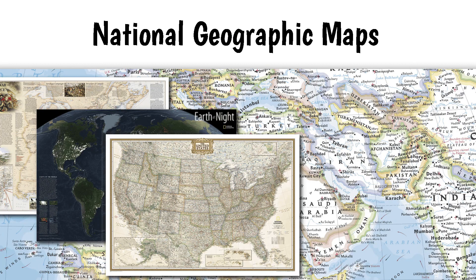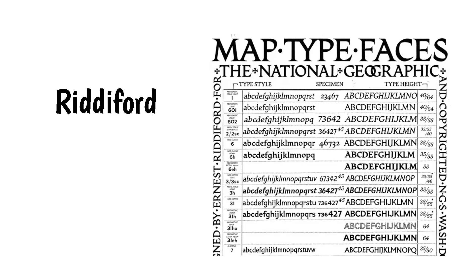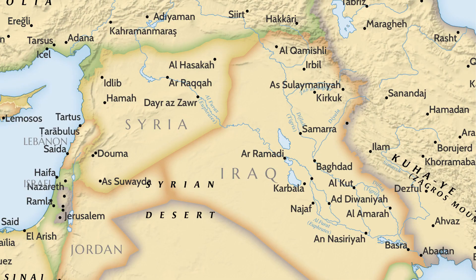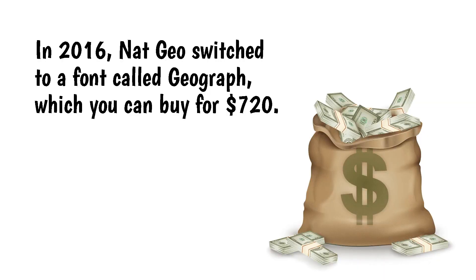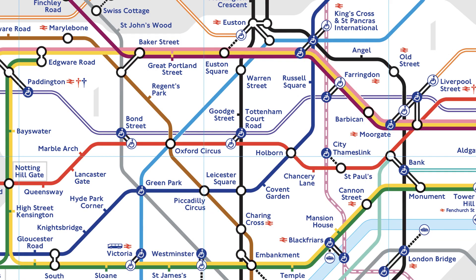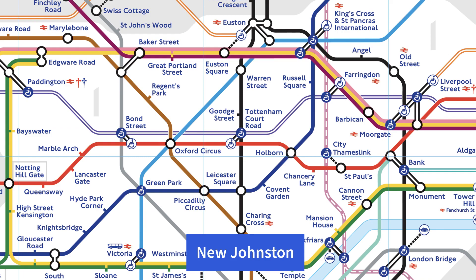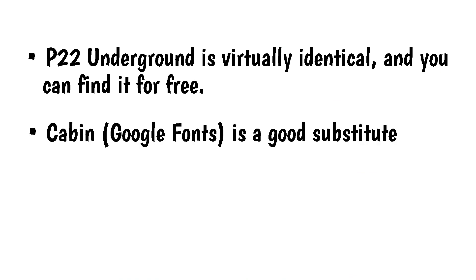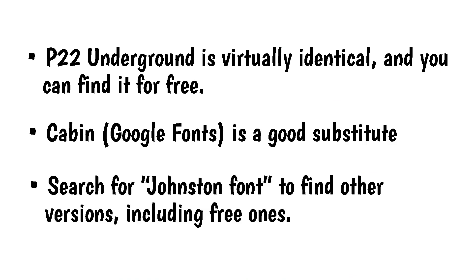Famous maps. National Geographic maps use a proprietary font called Ritterford, which is not available to the public. I've come up with a table of suitable substitutes — all available for free from Google Fonts. In 2016, National Geographic switched to a font called Geograph, which you can buy for $720. The London Tube map is well known for its excellent clean design — the typeface used is called New Johnston. P22 Underground is virtually identical and you can find it for free. Cabin from Google Fonts is a good substitute.